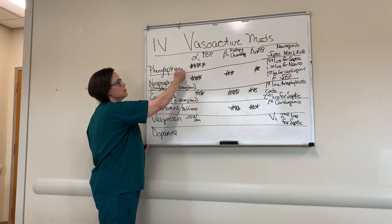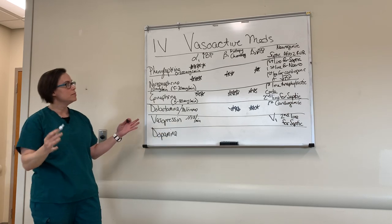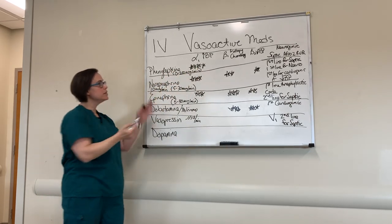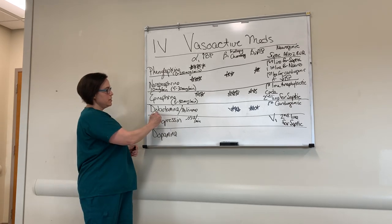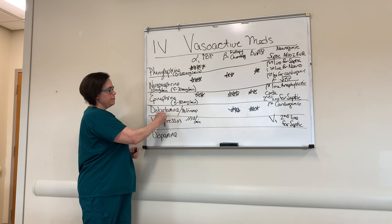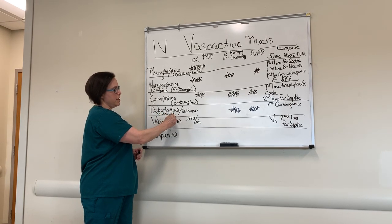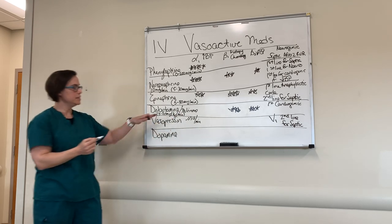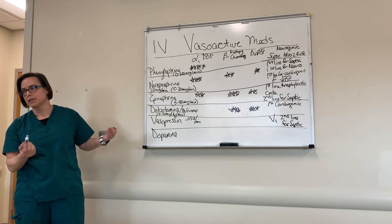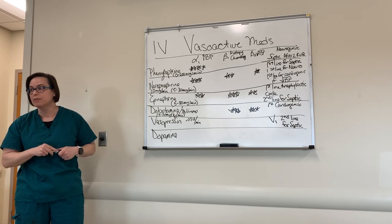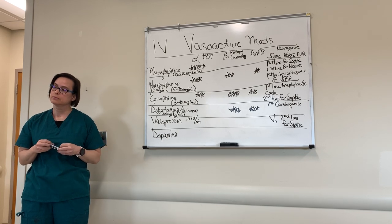Phenylephrine dosing is roughly 0 to 200 micrograms per minute — a wide range, but we don't use it that much anymore. Dobutamine dosing is 5 to 20 micrograms per kilogram per minute. A useful memory trick: the 'D drugs' (dobutamine, dopamine) tend to be dosed in micrograms per kilogram per minute, whereas the others are dosed in micrograms per minute.